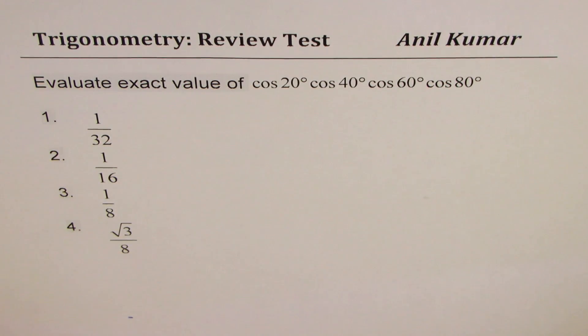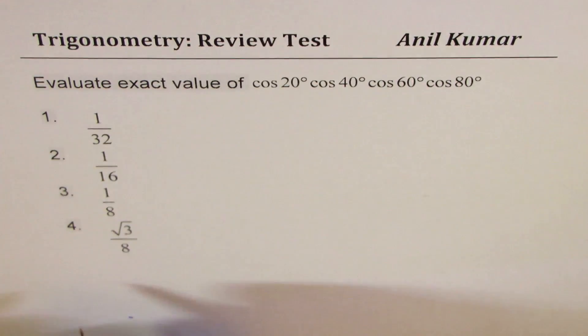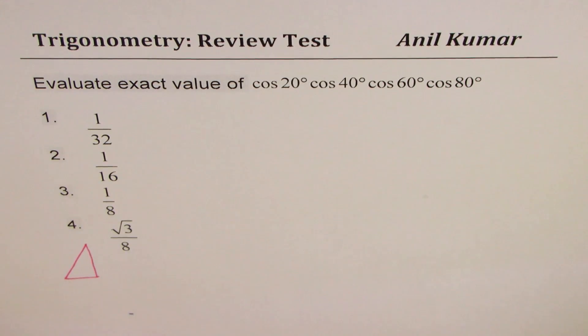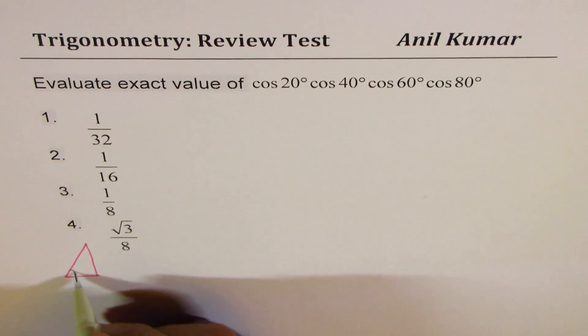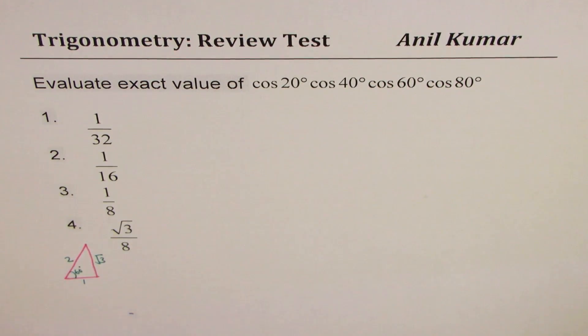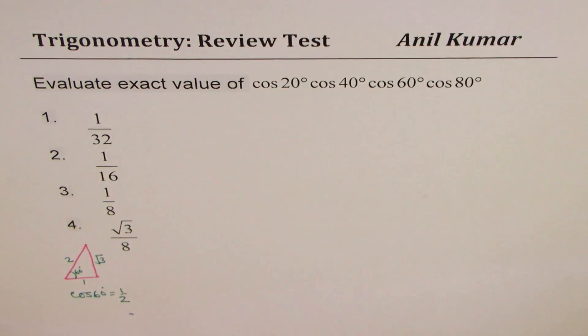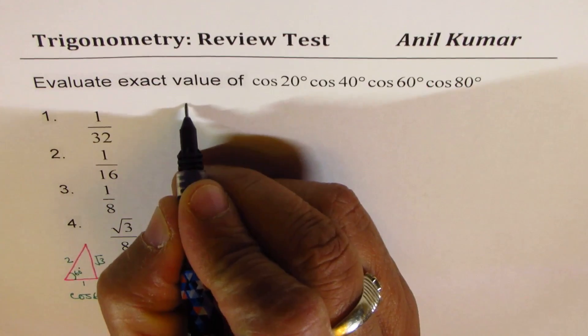Before we begin, we'll look into a couple of things. We know what is cos 60°. You can also work with the right triangle for 60 degrees - the ratio of the sides are 1 is to 2 is to square root of 3, and cos 60° is half. So we know cos of 60° is half, so you can always replace this with half.